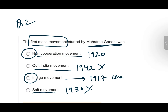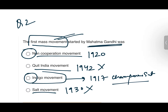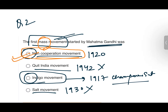The Indigo Movement refers to Champaran Satyagraha of 1917, which was Gandhi's first movement. But when talking about the first mass-level movement, the answer is the Non-Cooperation Movement. The first mass movement under Gandhi's leadership was the Non-Cooperation Movement, which ran from 1920 to 1921.